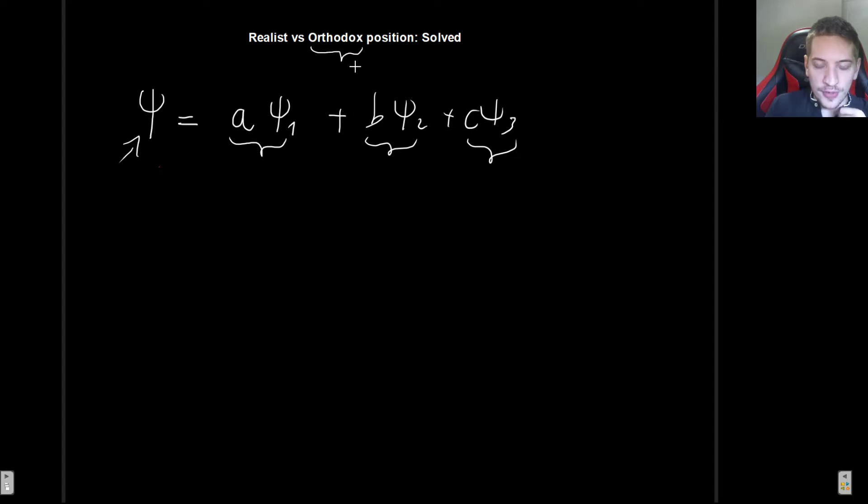This is, by the way, why it is called the orthodox position. And there is the realist interpretation that says that this is not correct. That means that our theory is somehow wrong, or there is something missing, or our experiments are just not clever enough. But if we were to be able to either make better experiments or just improve our theory, then, just as we can in classical mechanics, we could always predict the outcome of an experiment.